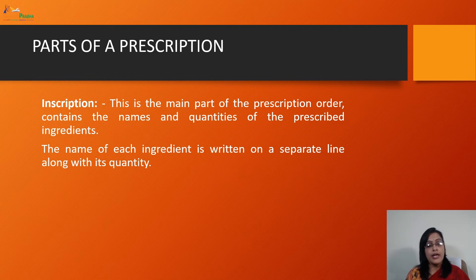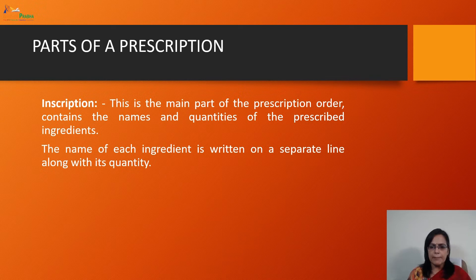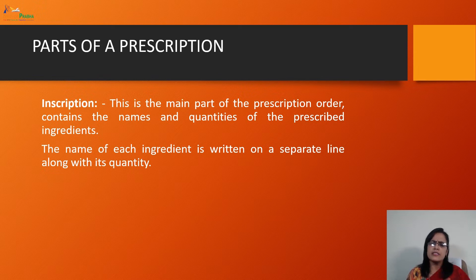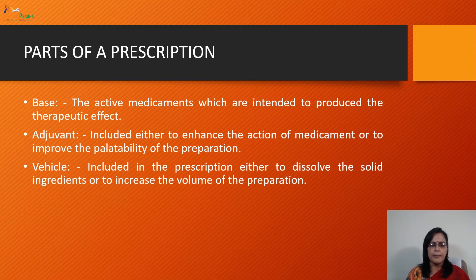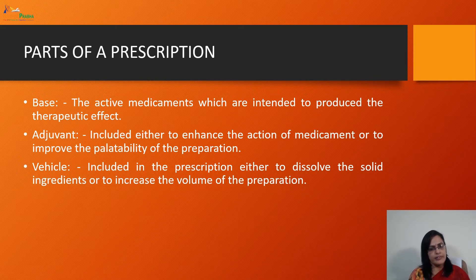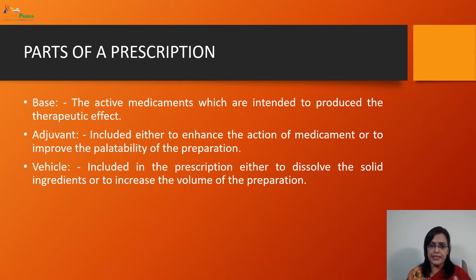Inscription is the main part of the prescription. It contains the name and quantity of the prescribed ingredients, with the name of each ingredient written on a separate line along with its quantity. It is divided into a few parts: base, adjoint, and vehicle. The base is the active medicament intended to produce the therapeutic effect — just like the active ingredient in a dosage form responsible for giving the therapeutic effect.